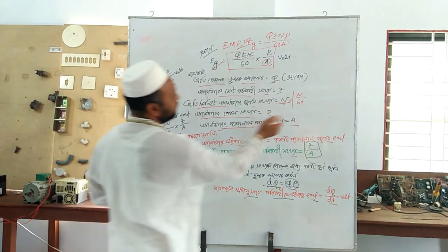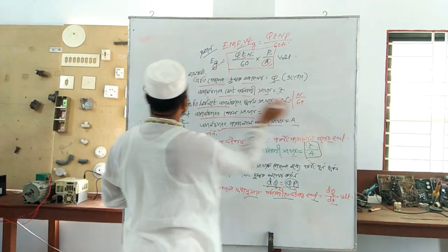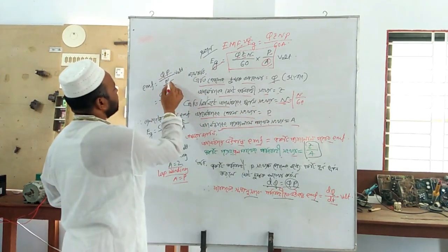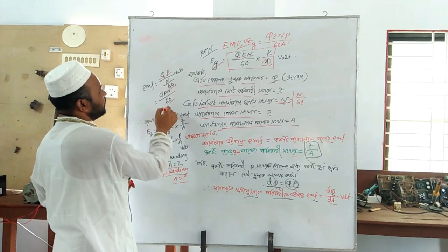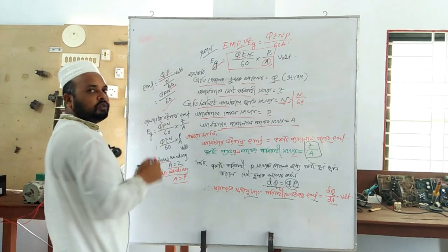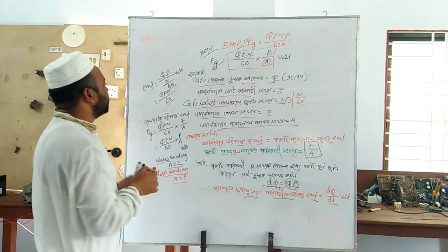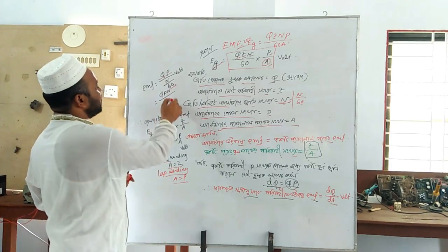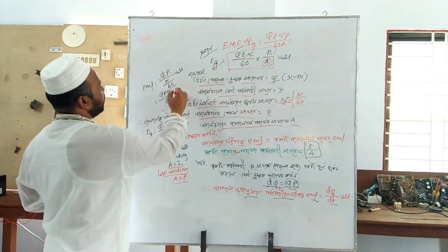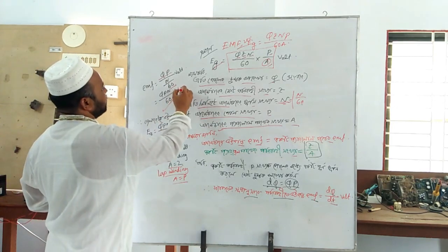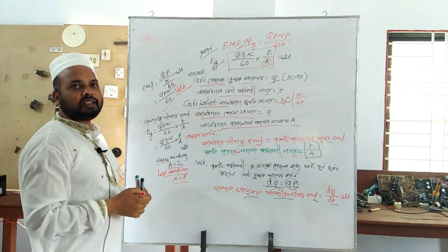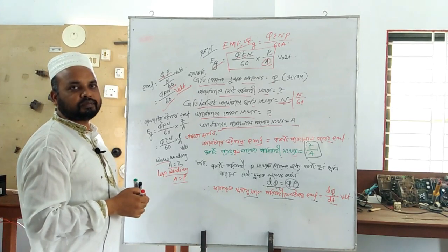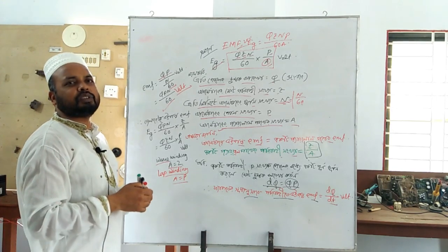Second, N by 60 is equal to N by 60. This is equal to phi times P times N by 60. This is equal to 1 volt. This is equal to 1 volt. This is equal to 0.